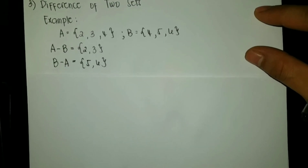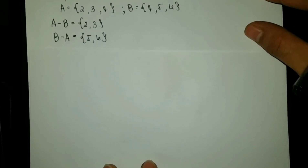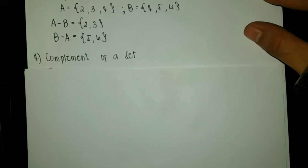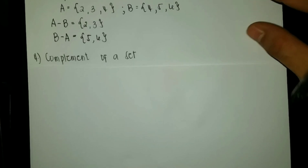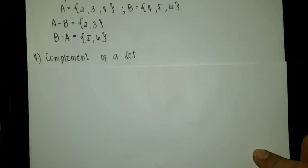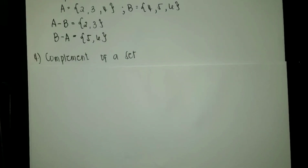The fourth and the last operation on set is the complement of a set. Complement of a set is a set of elements of the universal set which are not elements of the given set.